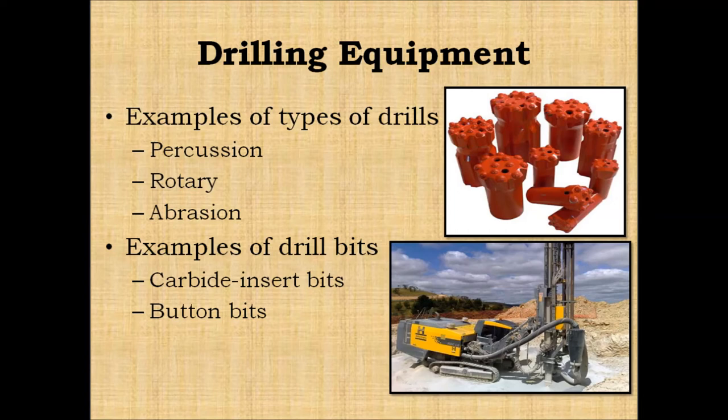Carbide insert bits consist of tungsten carbide that is embedded in steel. These bits are more expensive than steel bits but have a greater drilling rate. Button bits can yield faster penetration rates in a wide range of drilling applications. They are available in different cutting face designs and are usually never reconditioned.